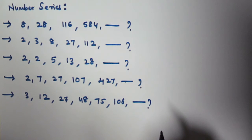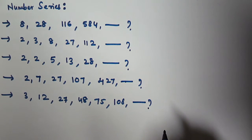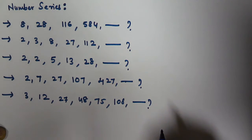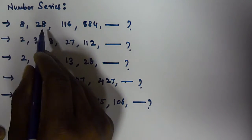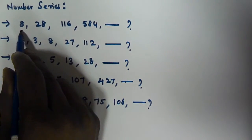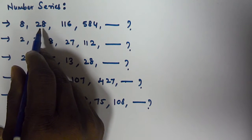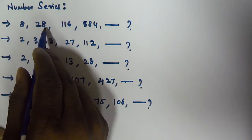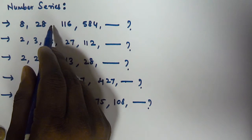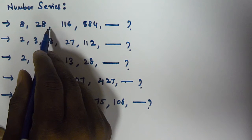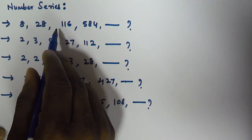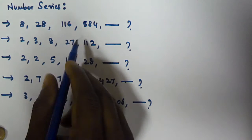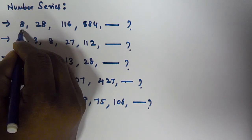So looking at the first series: 8, 28, 116, 584. How do we get 28 from 8? 8 times 3 is 24, and plus 4 gives us 28. Then 28 times 4 is 112, and plus 4 gives 116.